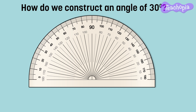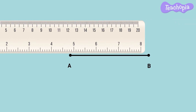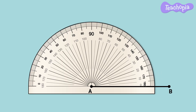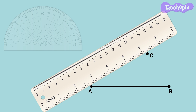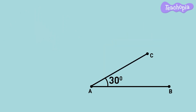Let us mark two points A and B and join them using a scale. To construct an angle of 30 degrees at A, keep the protractor center point aligned with point A and keep the zero degree reference line of the protractor on the line segment AB. From AB, mark a point at a 30 degree angle at C. Now join the points A and C using a scale. Using the protractor we have drawn a 30 degree angle.